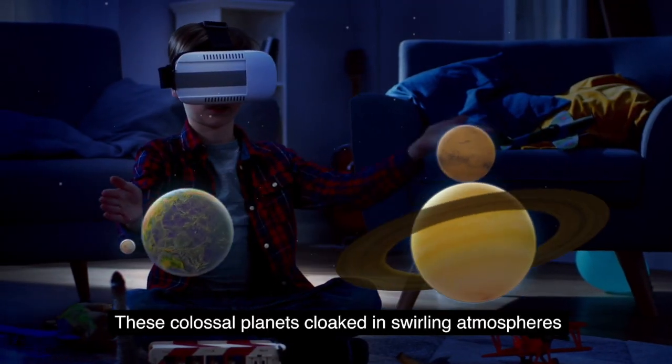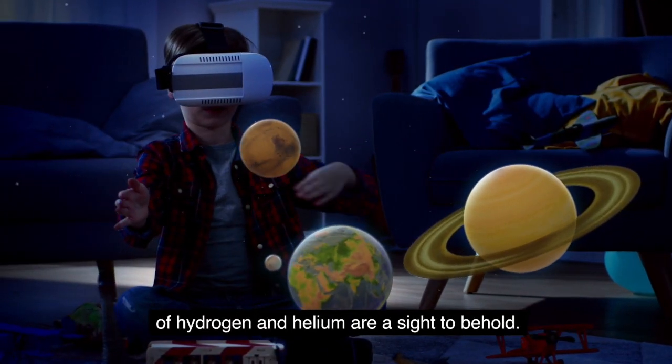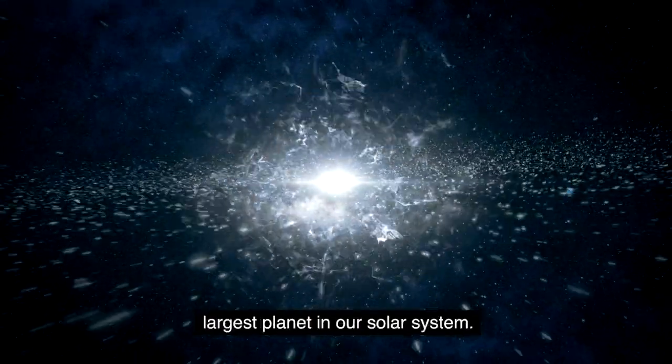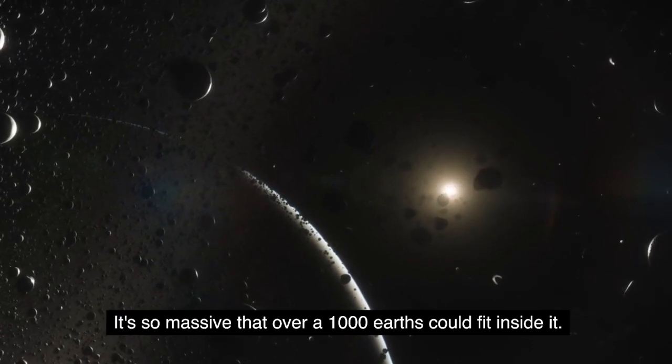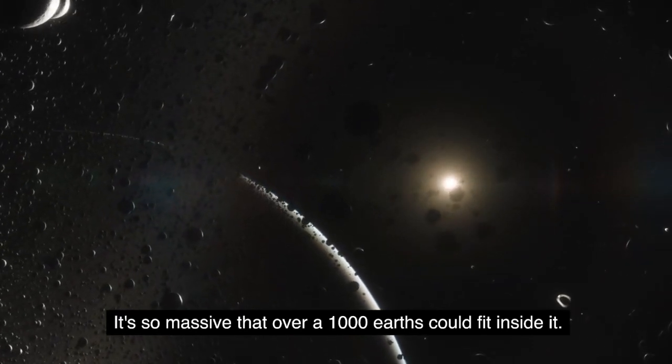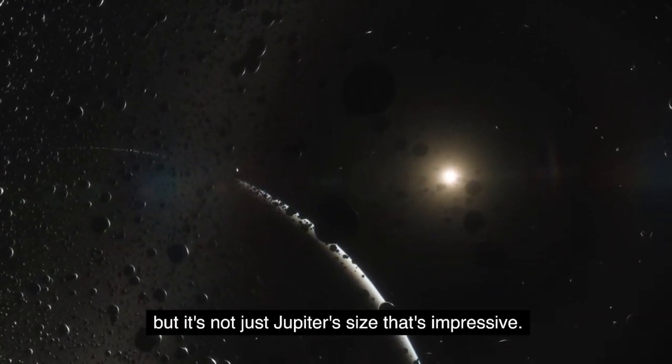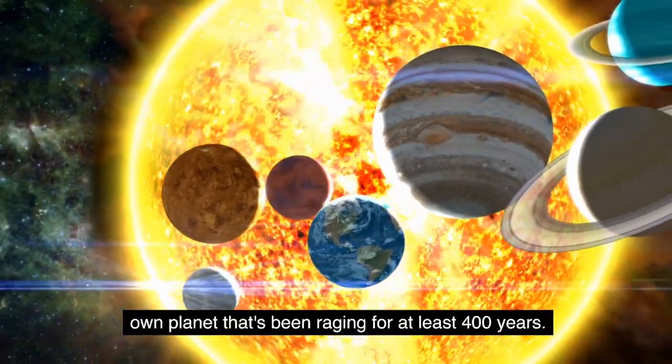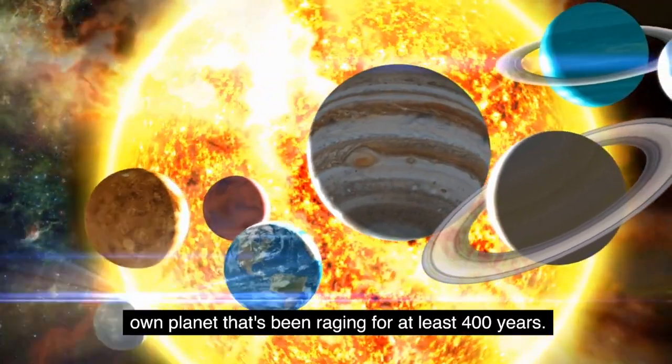These colossal planets, cloaked in swirling atmospheres of hydrogen and helium, are a sight to behold. First up, we have Jupiter, the largest planet in our solar system. It's so massive that over a thousand Earths could fit inside it. But it's not just Jupiter's size that's impressive. There's also the great red spot, a tempest larger than our own planet that's been raging for at least 400 years.